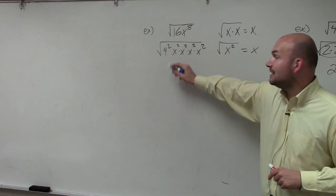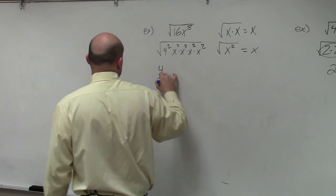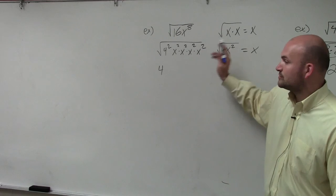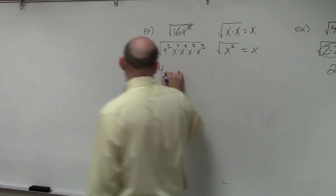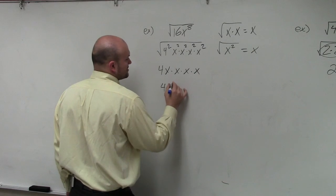So now, can I take the square root of 4 squared? Yeah, it's just going to be 4. And then I can take the square root of x squared, take the square root of x squared, take the square root of x squared, take the square root of x squared. So it's x times x times x times x, 4x to the fourth.